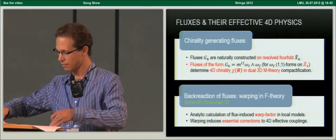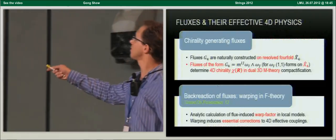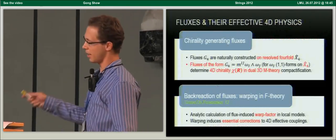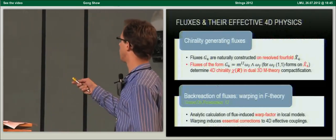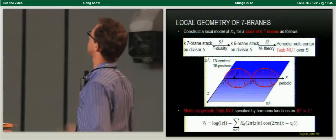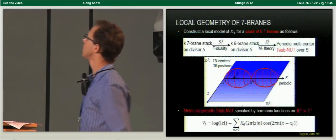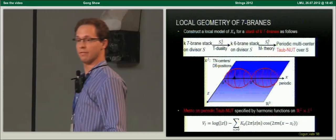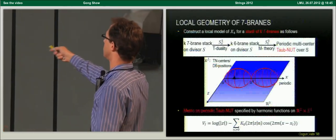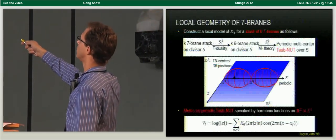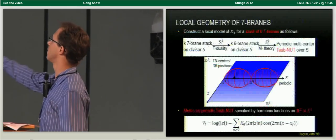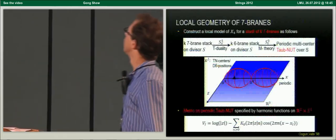In my second point, I would like to emphasize that the back reaction of fluxes is essential in order to understand the full F-theory effective action in four dimensions. I will demonstrate this in a local model where the warp factor can be explicitly calculated. The local geometry I consider is a periodic multi-center Taub-NUT space that can be viewed as a local model for the elliptically fibered Calabi-Yau four-fold in the vicinity of a stack of K7 branes, with a periodic direction because we have identified type IIB and type IIA theory by compactifying on an S1.